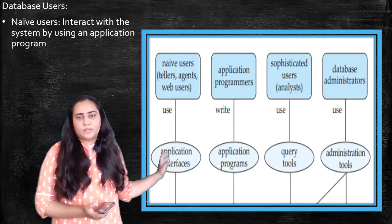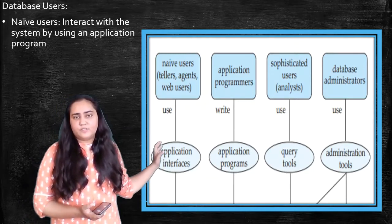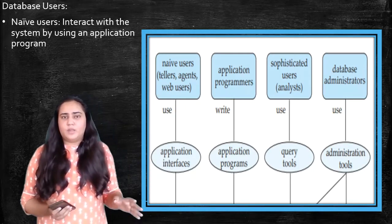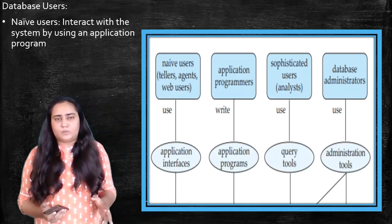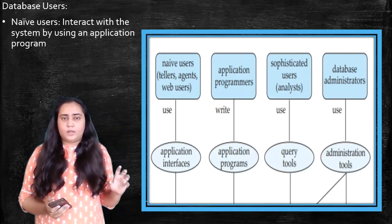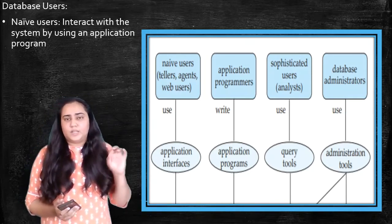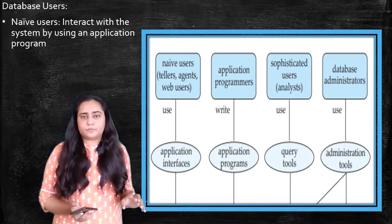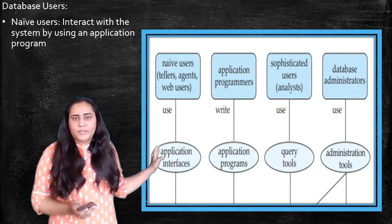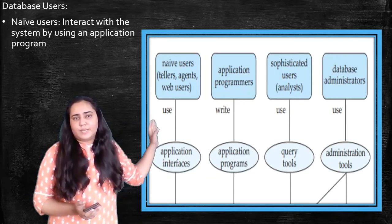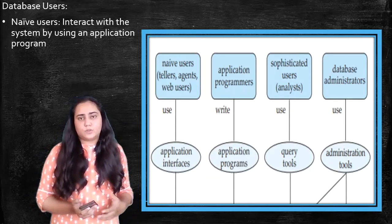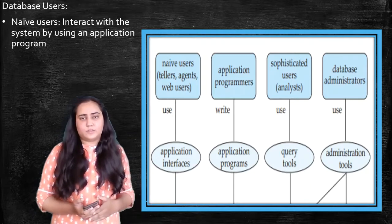We do not know how the person who's running the movie booking application is storing things in the database. So such users are called naive users, and they use application interfaces. Because these interfaces are nothing but an attractive looking application where you can see lots of buttons so that you can click on them and perform your tasks. So application interfaces are used by these naive users. They interact using these interfaces.